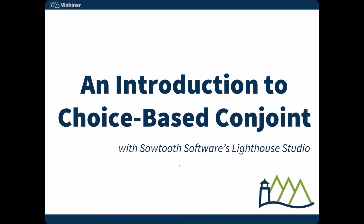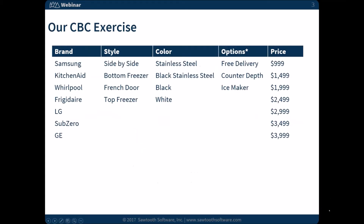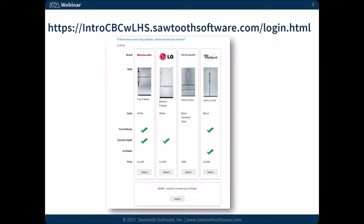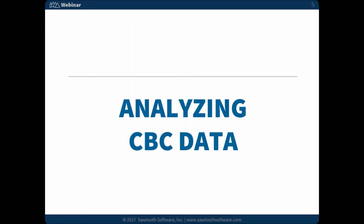This is Part 2 of our webinar. If you want to know more about how this survey was put together, that's Part 1. As a quick reminder, this was a study about refrigerators. We had brand, different styles, different colors, some yes-no options about delivery, whether or not it was the same depth as your counters, whether or not it had an ice maker, and some prices. We've gathered our data, and today we're going to be talking about analyzing that data we collected.